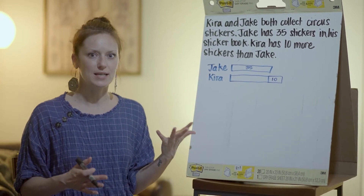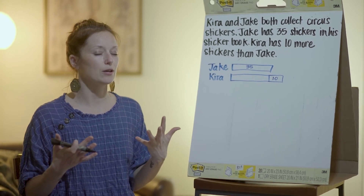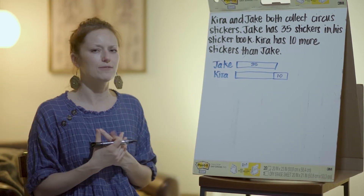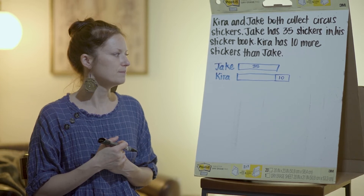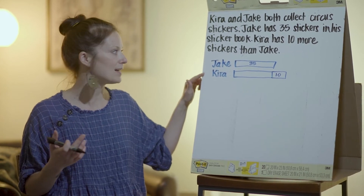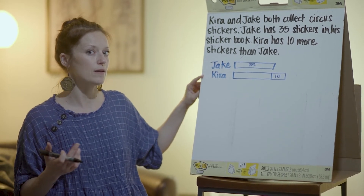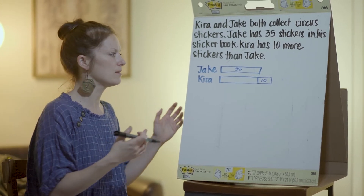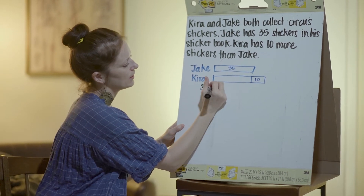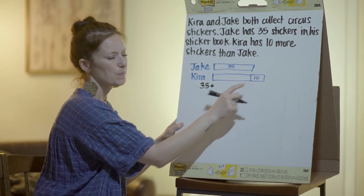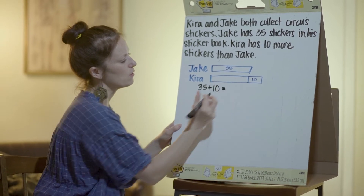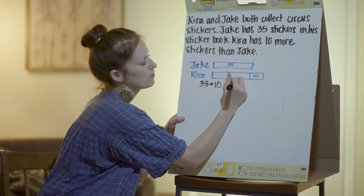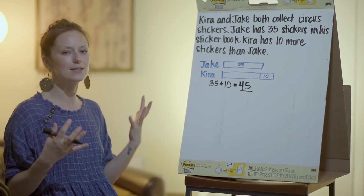Now that we have all this information and this drawing, I wonder if you can guess what the question is that I need to ask — because you'll notice this problem doesn't have a question. We need to figure out how many stickers Kira has. We know how many Jake has, and we know that Kira has 10 more than him, but we still don't know exactly how many she has. So we need to write an equation: we start with 35, and since Kira has 10 more, we add 10. Counting by 10s, 35 plus 10 is equal to 45 — so Kira has 45 stickers.